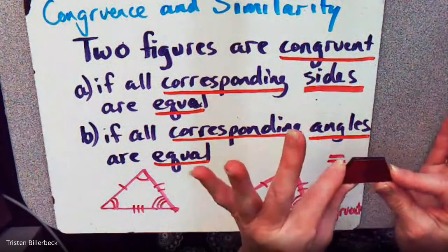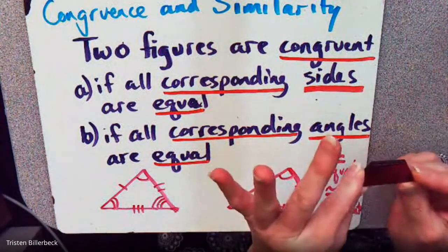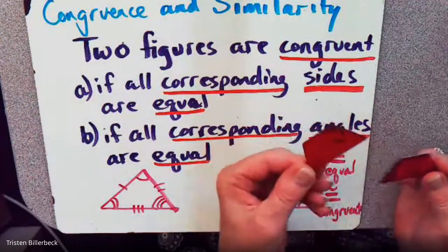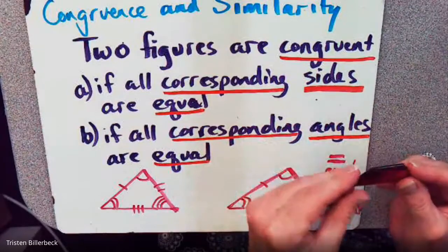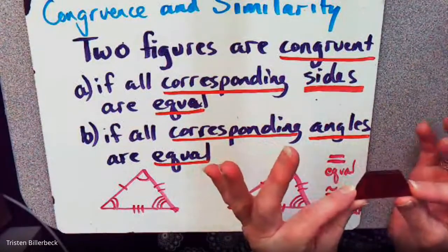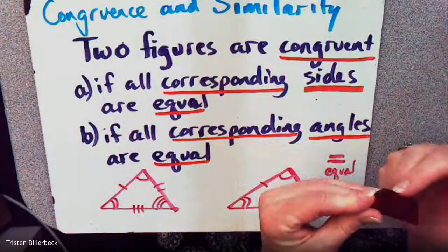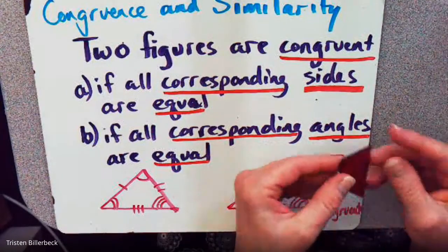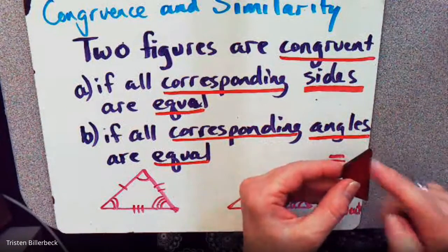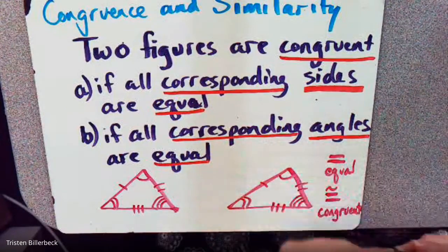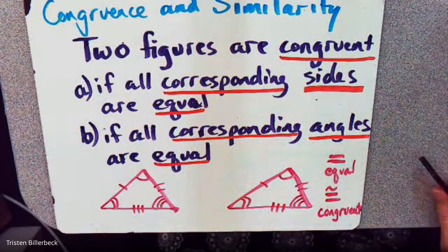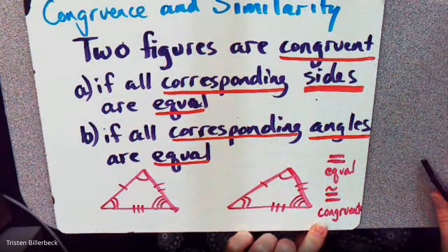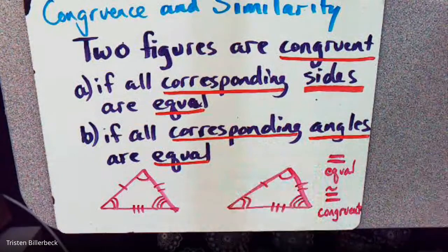When one is placed over the other it's indecipherable, and then when you take them apart there are two objects. The measures of each side are equal, and the corresponding angles are equal. That's the difference between equal and congruent — congruent is about an object, equal is about a measurement.